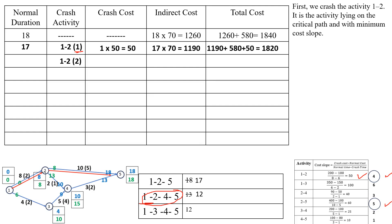Next, crash activity 1-2 for another day in both the 1-2-5 path and the 1-4-5 path. The 1-2-5 path becomes 16 days and the 1-4-5 path becomes 11 days. Crashing cost is now 50 plus 1 into 50, which is 100. Indirect cost is 16 into 70, which is 1,120. Total cost is 1,120 plus 580 plus 100, which is 1,800 rupees.